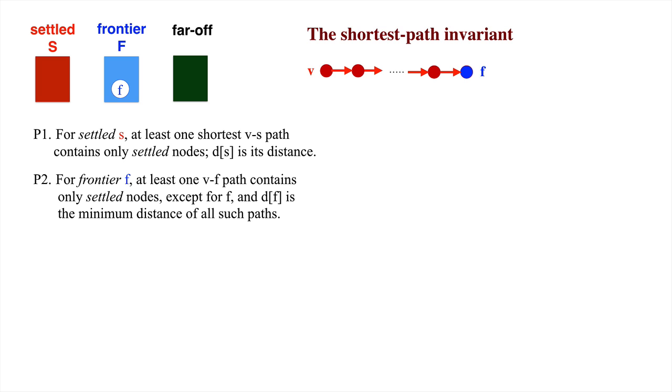That is, over paths that start with a settled node v, perhaps contain more red nodes, and finally have one edge to f. There is a degenerate case when f and v are the same node, and it is in the frontier set. This degenerate case will make it easy to initialize the invariant, including putting v into the frontier set and not the settled set.